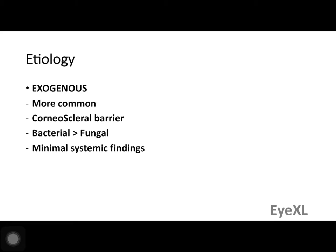Looking at bacterial endophthalmitis, it can occur through two pathways. The first is exogenous — the organism comes from outside the environment. The second is endogenous — it comes from within the body. Exogenous is more common because of the corneoscleral barrier, a dense avascular connective tissue that does not allow organisms to enter when intact. When this barrier is broken, bacterial infection is more likely than fungal, and minimal systemic findings such as fever, malaise, or lymphadenopathy are present.